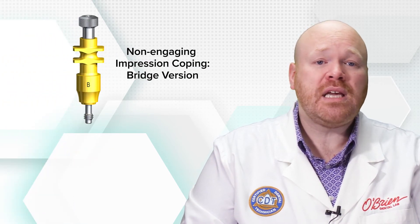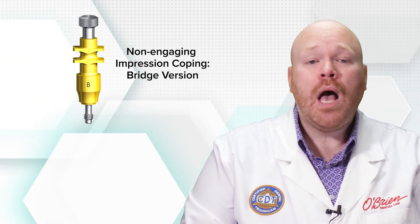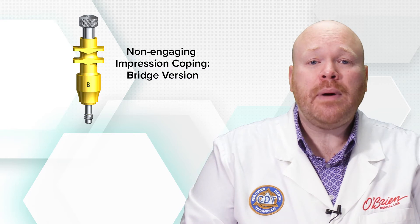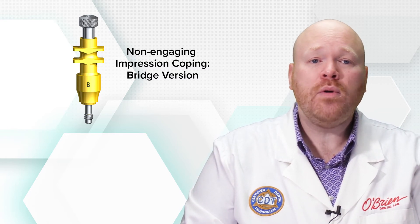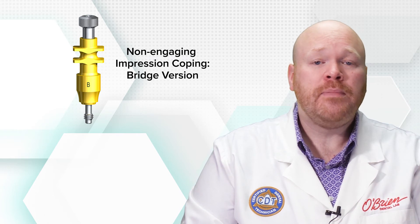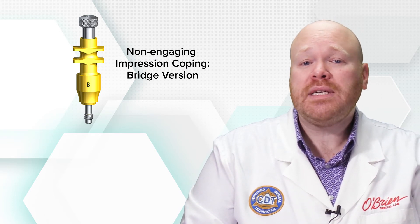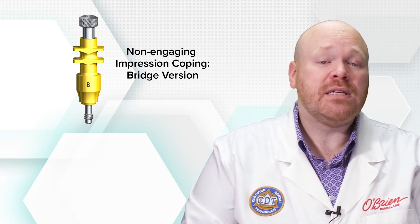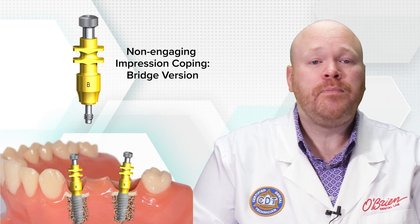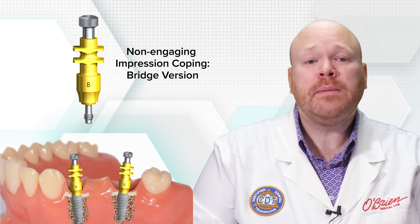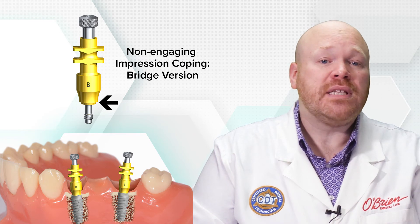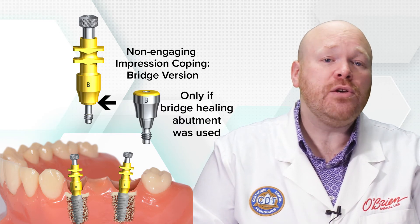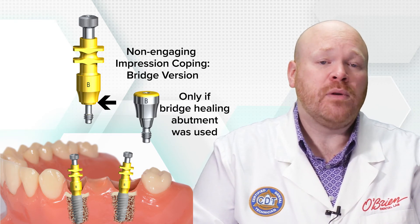Additionally, Nobel also offers non-engaging impression copings that can be used for these cases. Unlike the healing abutments, it's not required to use these specific impression copings as they won't impact tissue or bone growth. They will, however, make it easier to take the impression on cases with significant divergence between implants. Like the non-engaging GoldAdapt abutments, these impression copings have a ledge that covers the implants and therefore should only be used if the bridge version of the healing abutment was used.